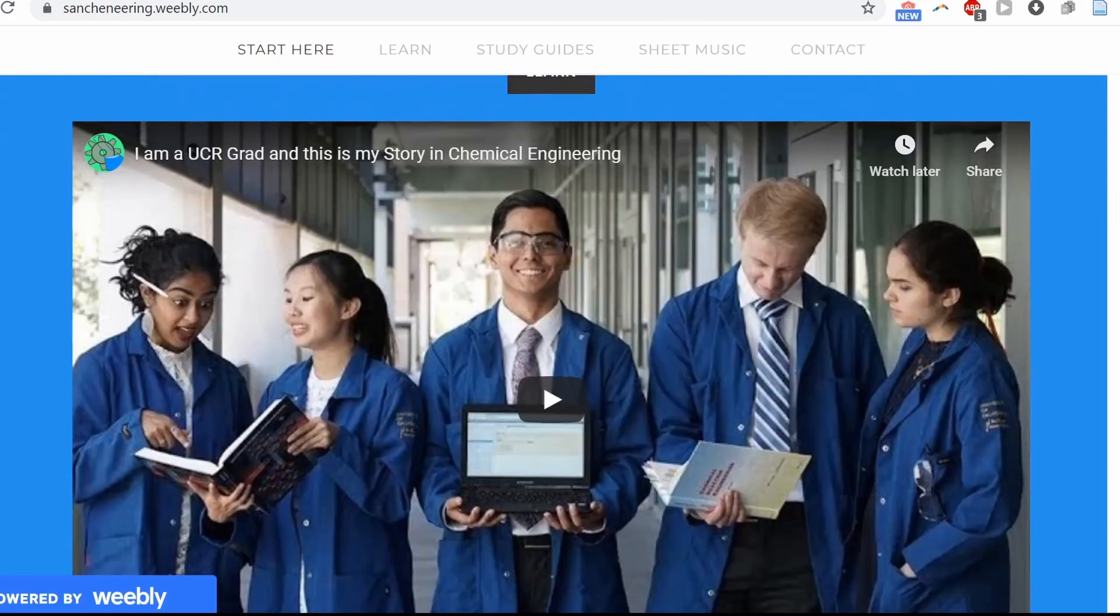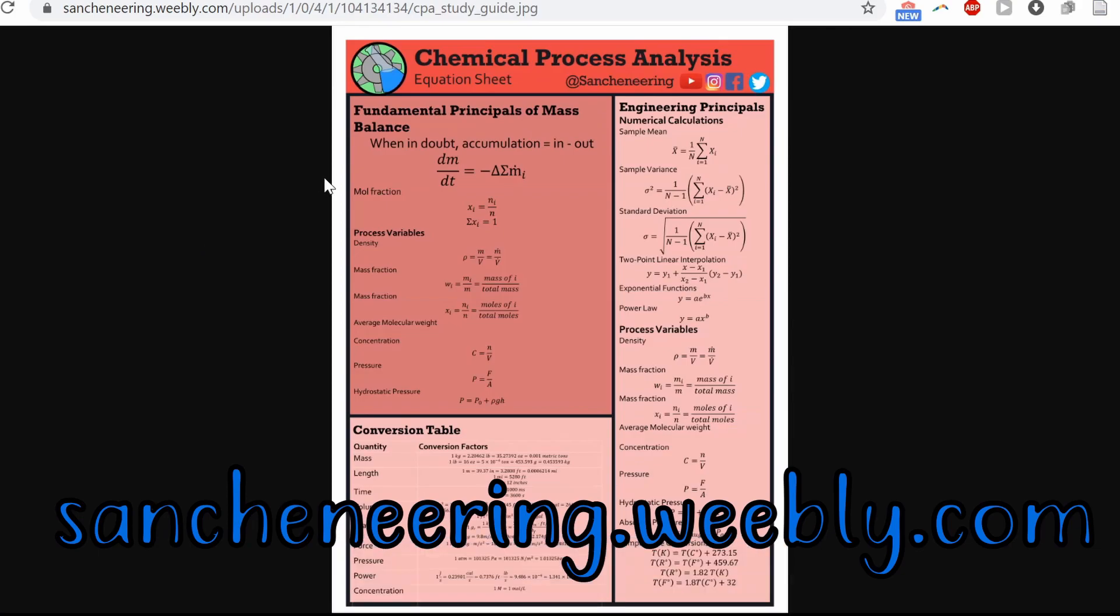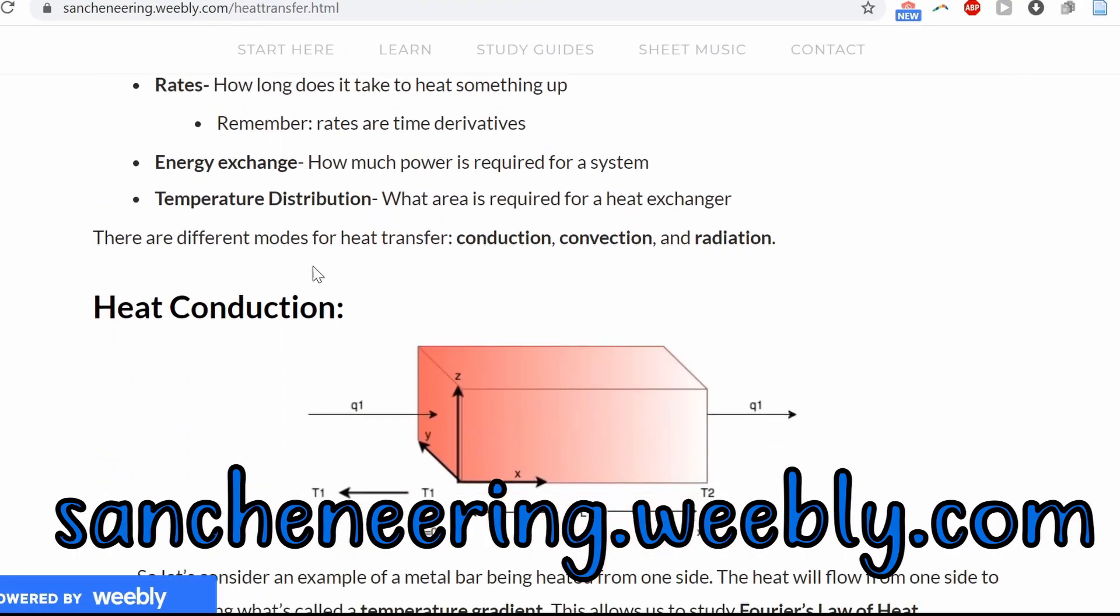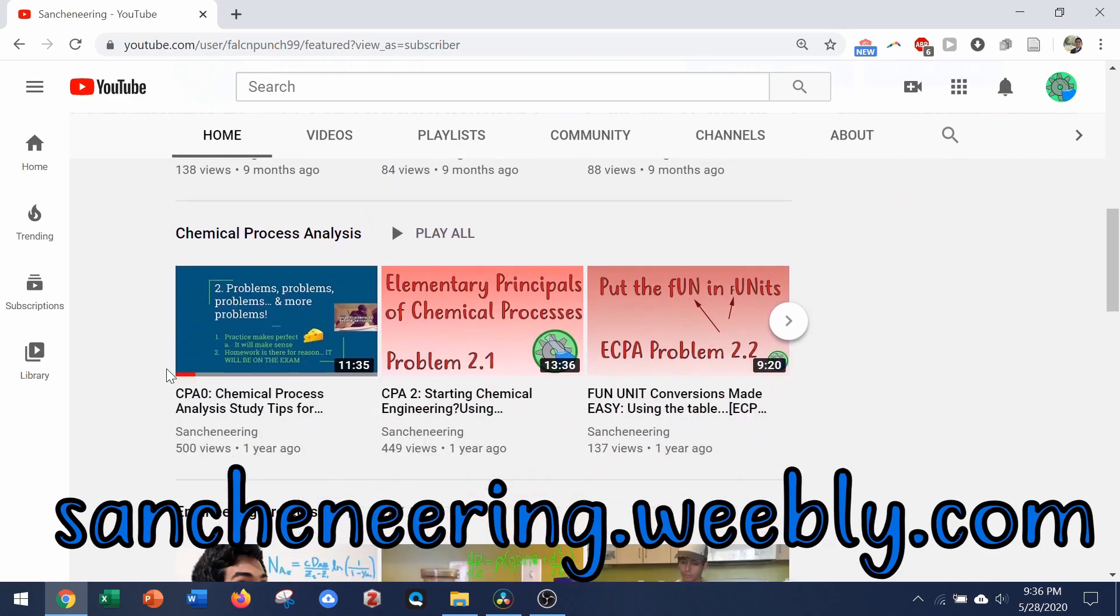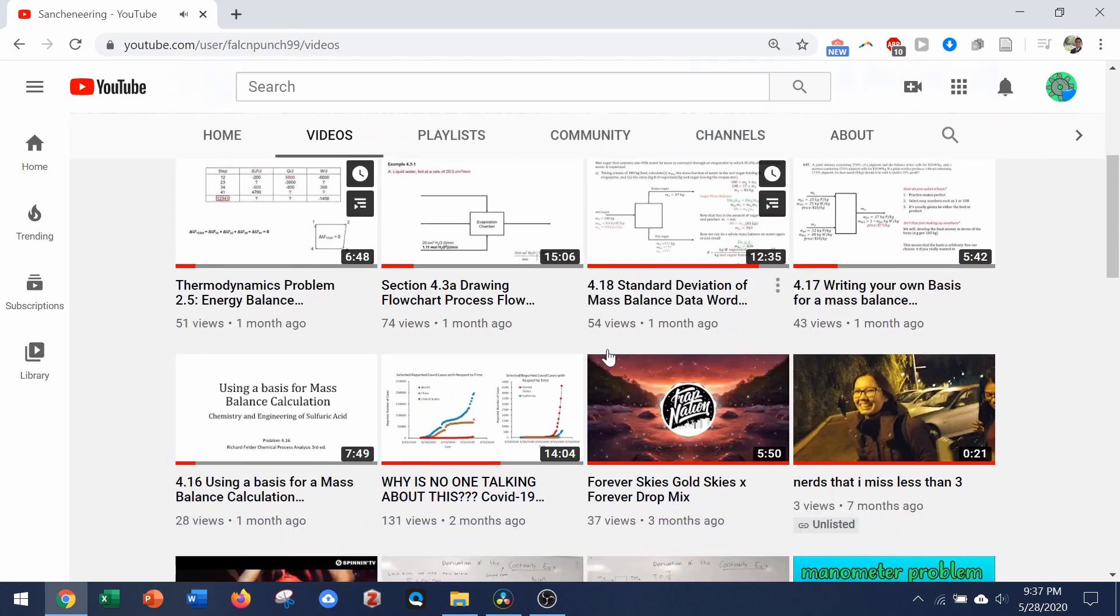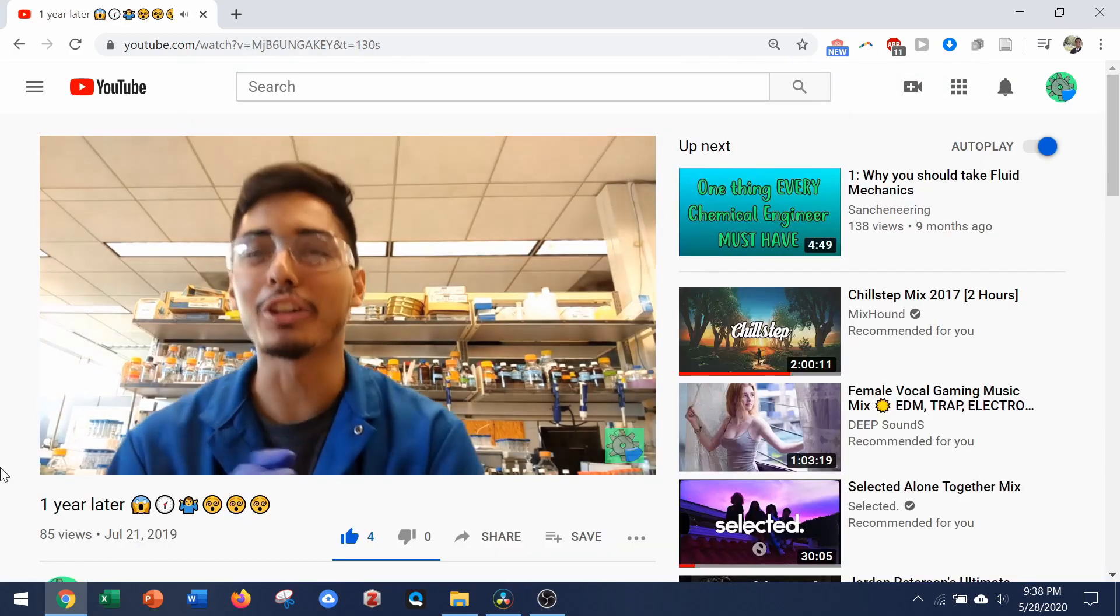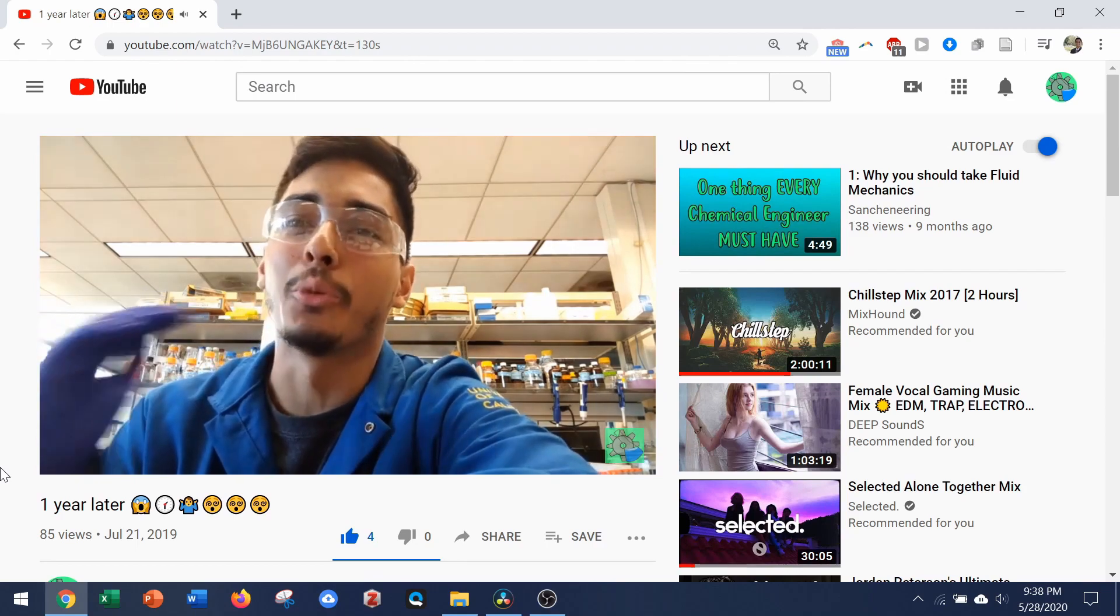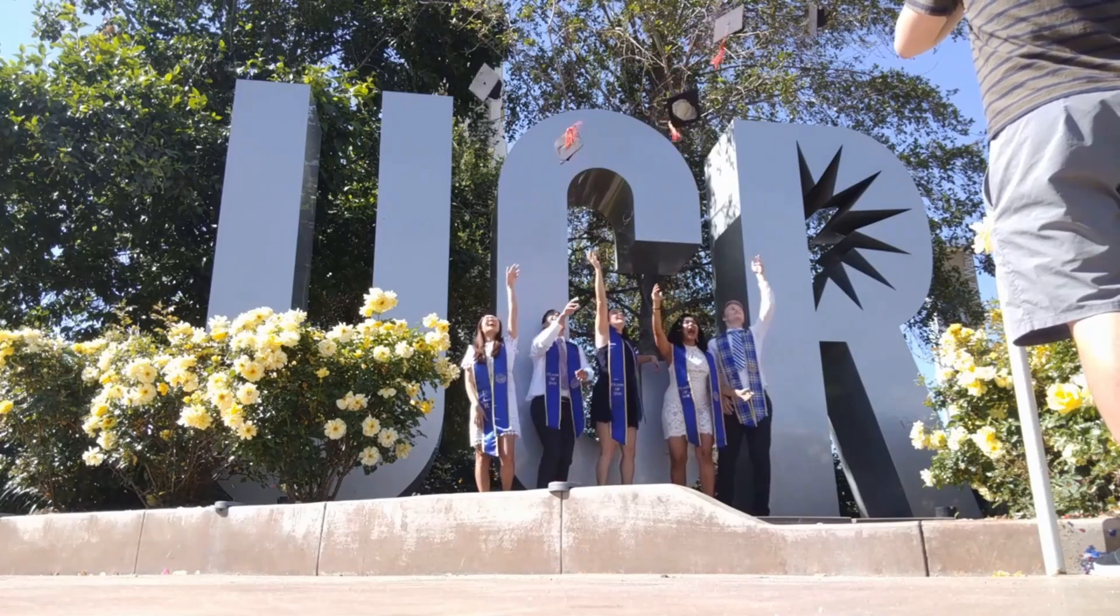Definitely check out my website, Sanctioneering.weebly.com. I got articles, PDFs, cheat sheets, calculators, and it's all completely free. Because I know for a fact that when I was a broke college student, I didn't pay for anything unless absolutely necessary. So that's why everything on Sanctioneering is completely free. All I ask is at the very least, you simply subscribe and share my videos with their friends and classmates if you enjoyed it. That way, we can all help each other. Don't forget to share this with your friends, family, and dog.